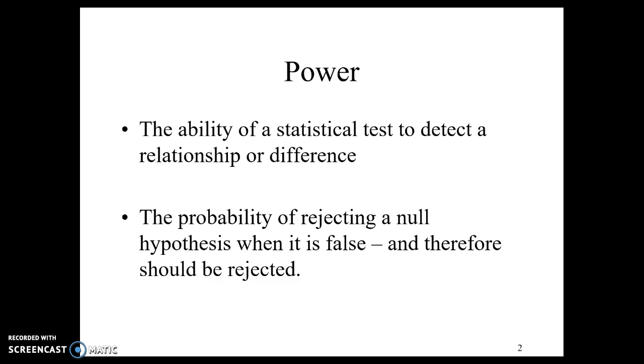Power is the ability of a statistical test to detect a relationship or difference. It's how much ability do we have to actually find significance if it exists in the first place. This comes down to what we talked about with type 1 and type 2 errors. Did we just not have enough power to find a difference when it exists in the population?